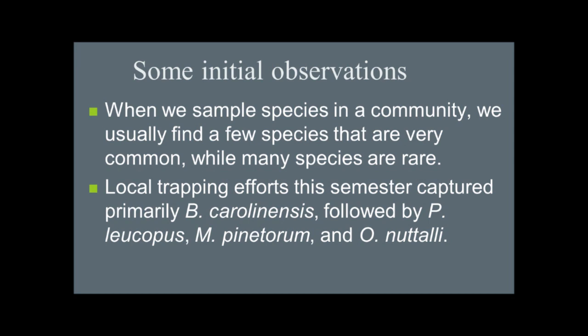When I go out trapping at Kelso Sanctuary, primarily what I'm going to catch are Blurina carolinensis, which is the short-tailed shrew, and Paramiscus leucopis, which is the white-footed mouse. Then on occasion you'll catch Microtus pinotorum, which is the pine vole, and the golden mouse, which is Ocrotomes natalii. Usually what you're seeing is the stuff that's common, but hidden behind all of that are species that are rare.